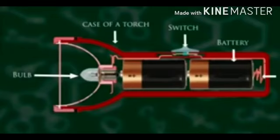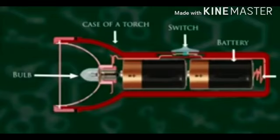Students, a circuit diagram shows the parts of the torch represented by symbols. There are two electric cells, a switch, and a torch bulb. The lines in the diagram represent the metal conductors which connect the system together.